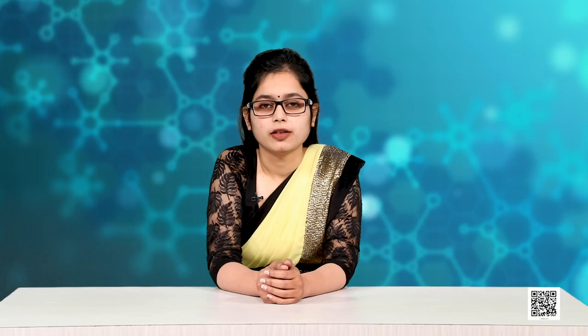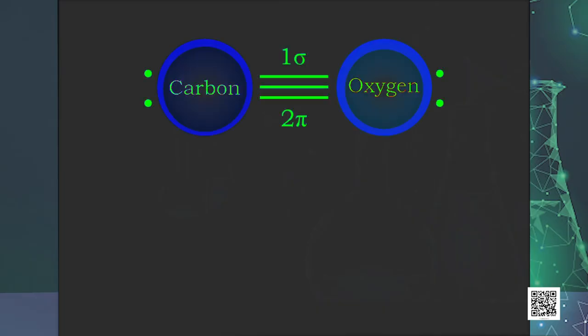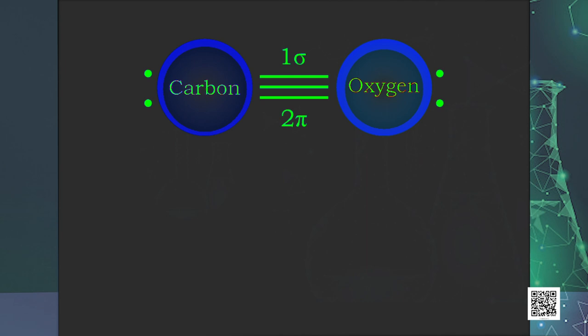When we talk about the structure of CO molecule, as you can see on your screen, there are one sigma and two pi bonds between carbon and oxygen, that is carbon triple bond oxygen. Because of the presence of a lone pair on carbon, CO molecule acts as a donor and reacts with certain metals when heated to form metal carbonyls.